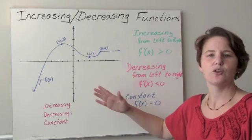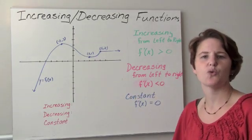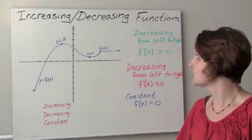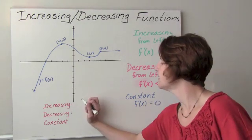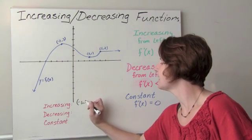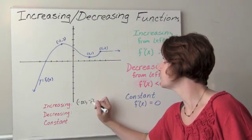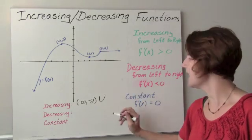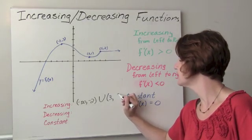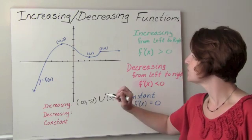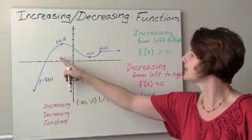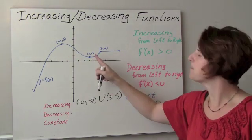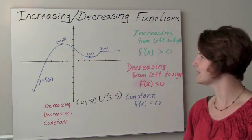When we talk about increasing and decreasing, we want to know the intervals that the function is increasing on — the x values. We see that we are increasing from negative infinity to negative 2, and that's what that union symbol means, and from positive 3 to 5. So during the intervals from negative infinity to negative 2, and from x equals 3 to 5, we're also increasing.